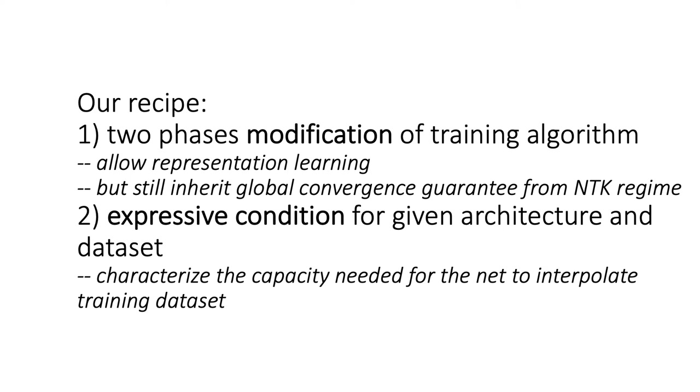Second part of the recipe is a criteria to check, which is the expressivity condition for a given architecture and dataset pair. It characterizes the capacity needed for the network to interpolate the training dataset.